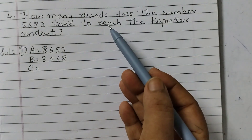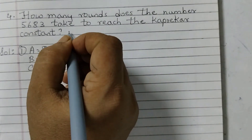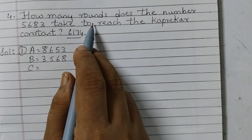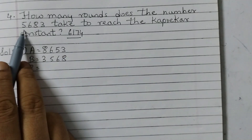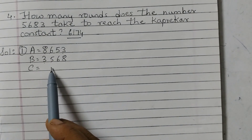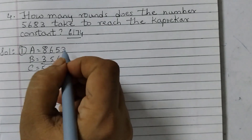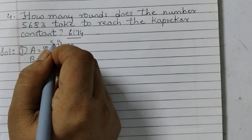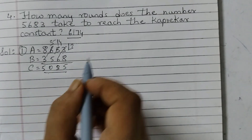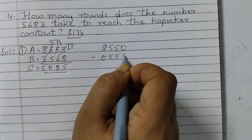This is the last question. How many rounds does the number 5,683 take to reach the Kaprekar constant 6,174? The rule is: form the largest number from the digits, then the smallest, and subtract. Starting with 5,683: largest is 8,653, smallest is 3,568. Subtracting gives 5,085 — that is round 1. Round 2: from 5,085 the largest is 8,550 and the smallest is 0,558. Be careful — we form the smallest number, which may be a 3-digit number.